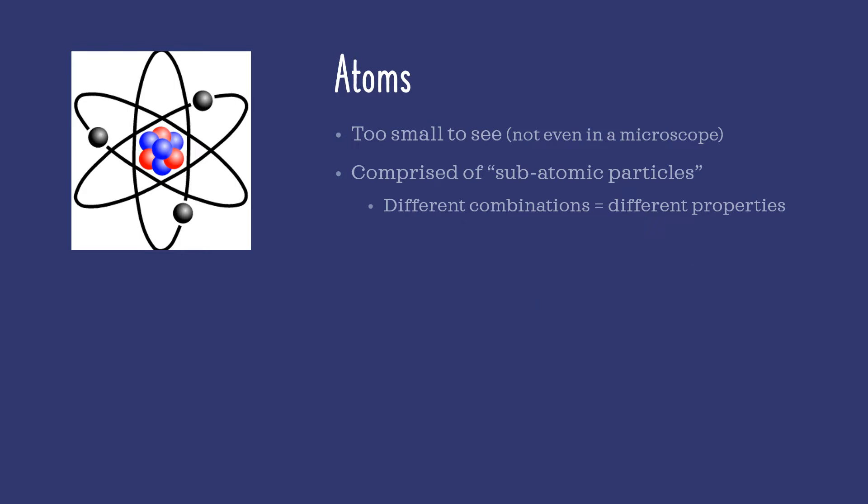So atoms, due to these differences in structure, come in different flavors. And you've heard of them. There are atoms of gold, oxygen, carbon, uranium, chlorine, neon, and so on.